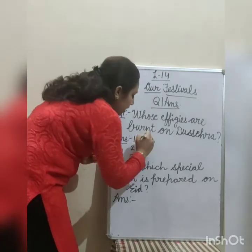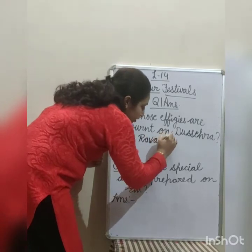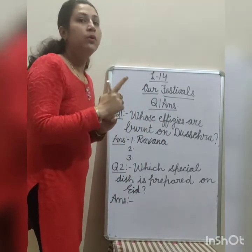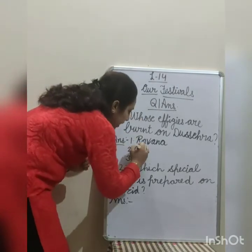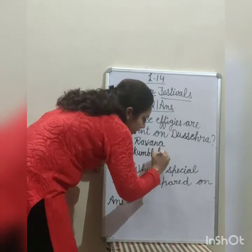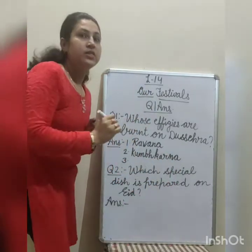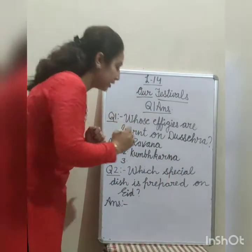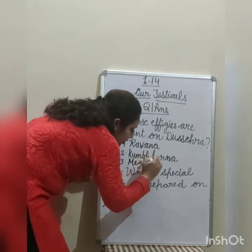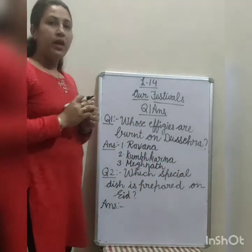Right here. First is Ravana — R-A-V-A-N-A, Ravana. Next is Kumbhkarna — K-U-M-B-H-K-A-R-N-A, Kumbhkarna. Next is Meghna — M-E-G-H-N-A, Meghna.